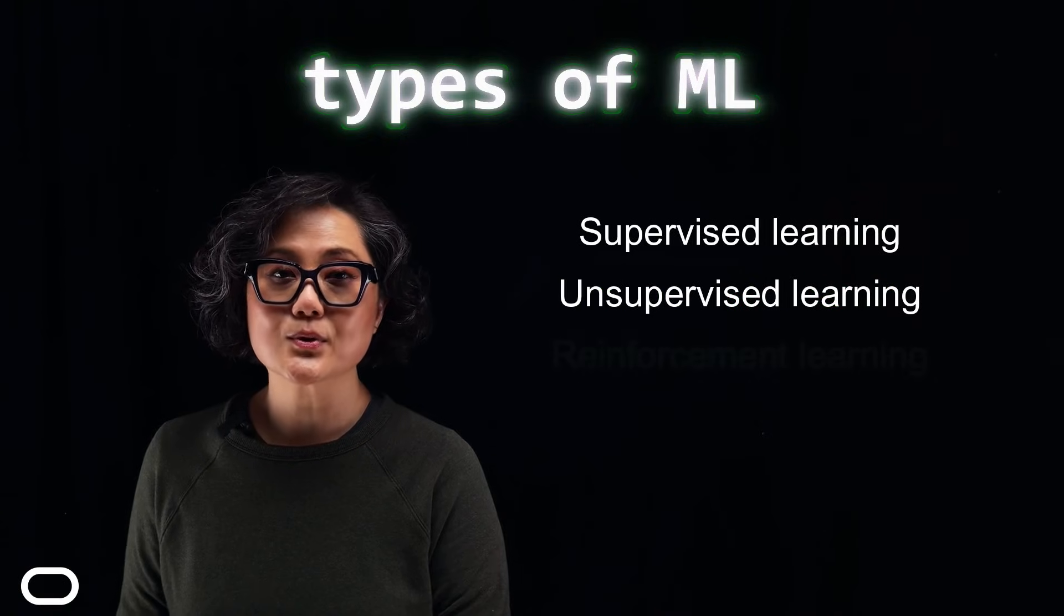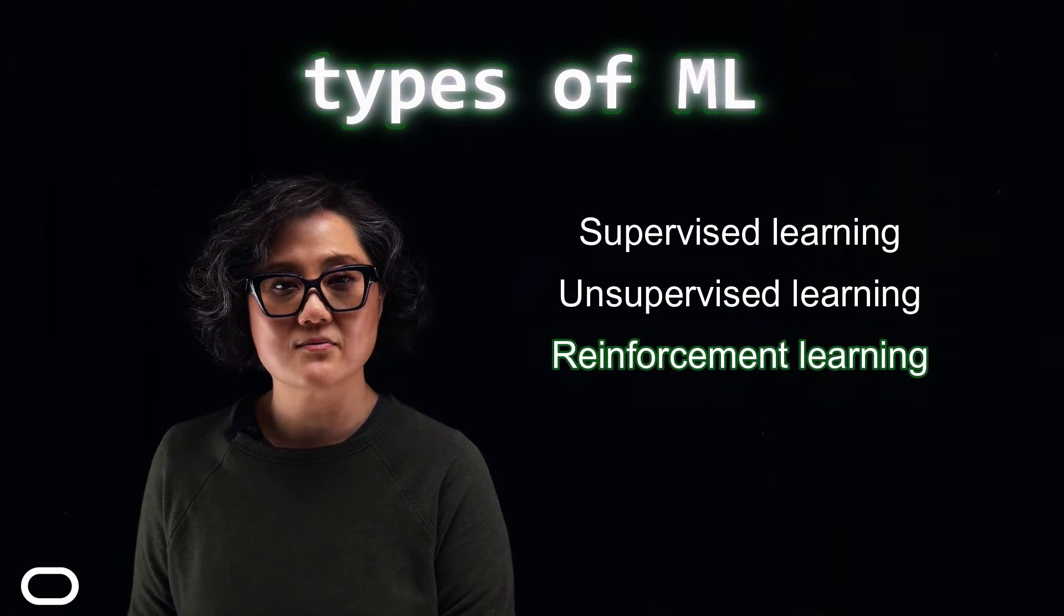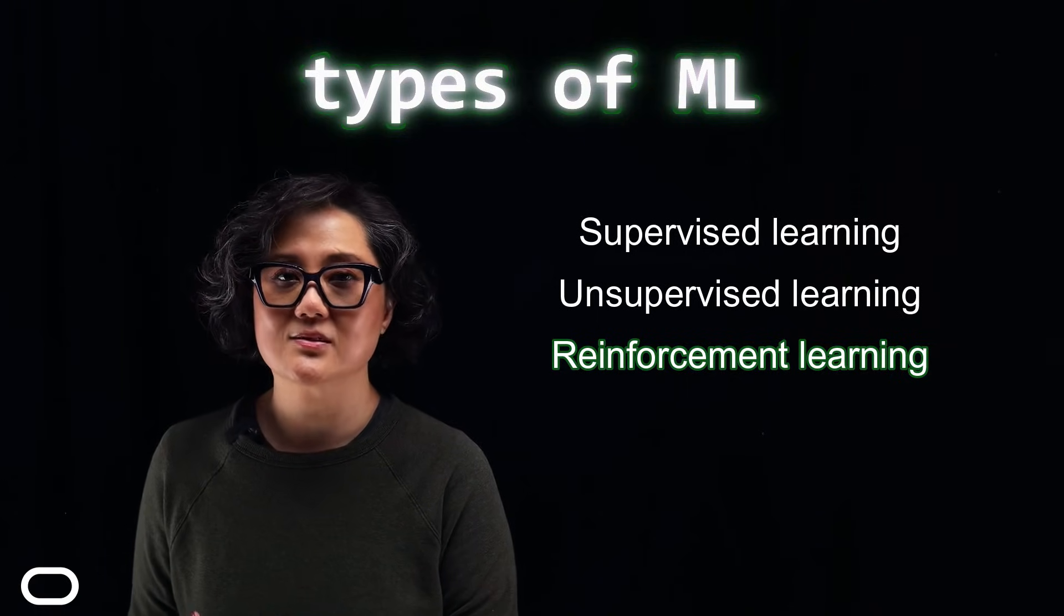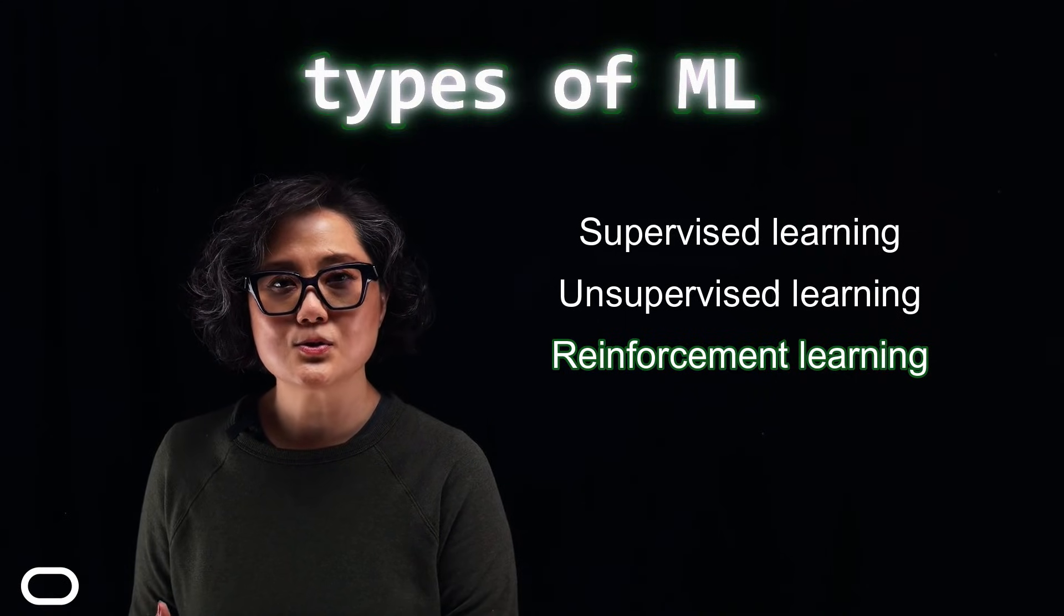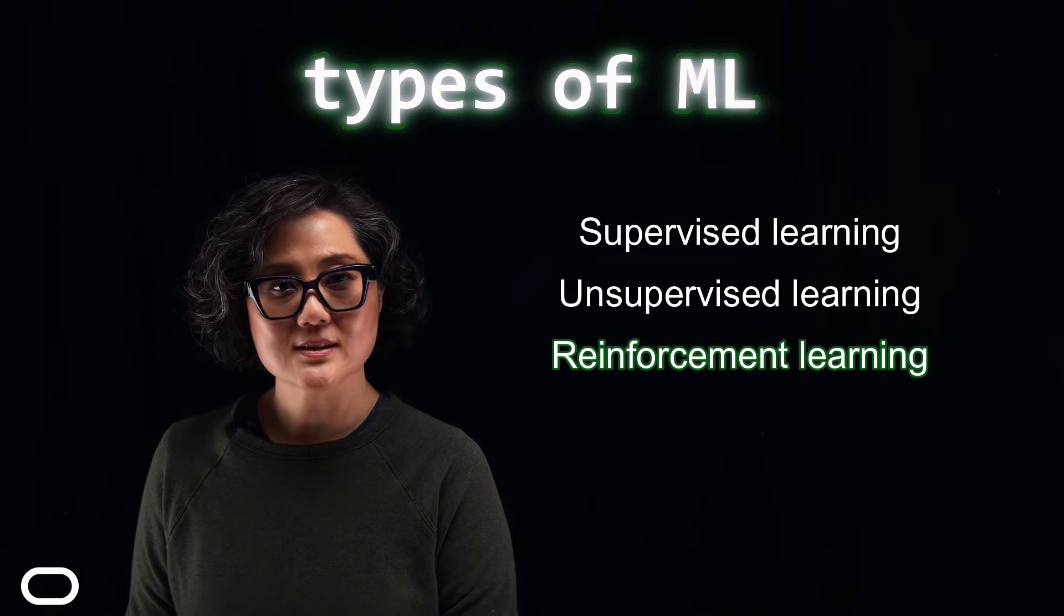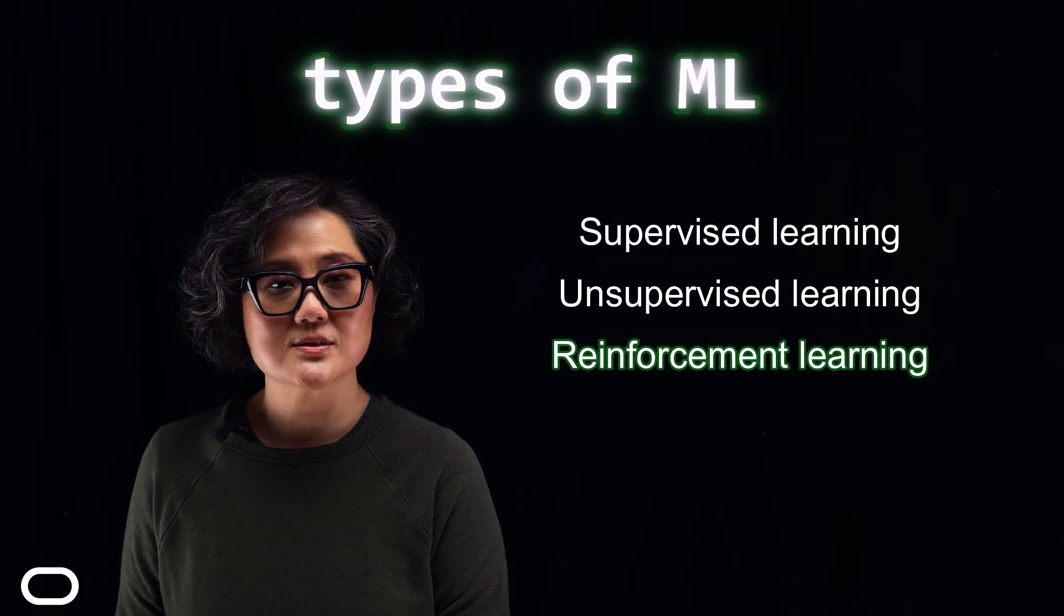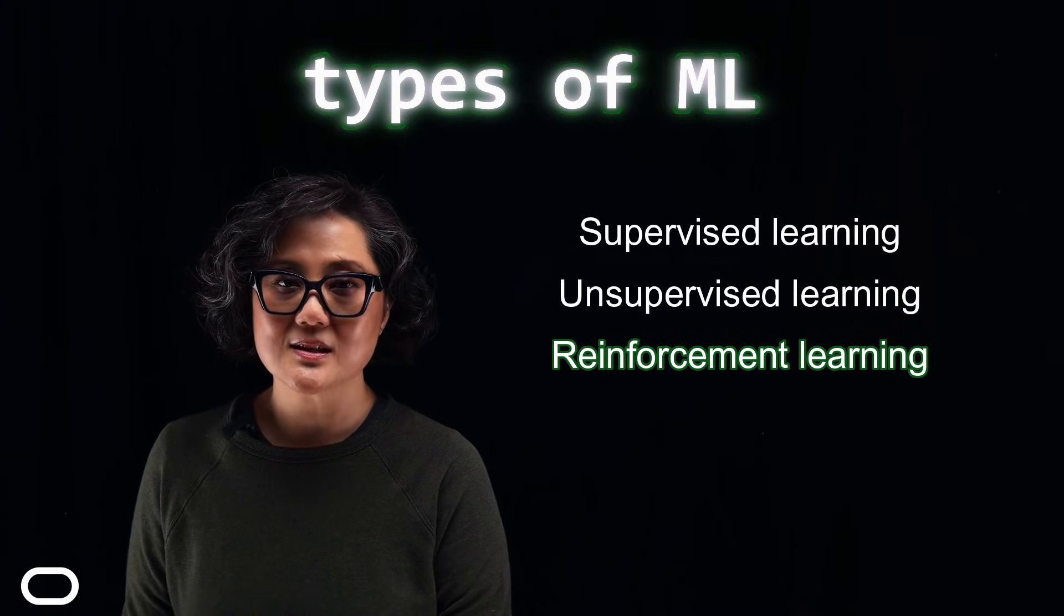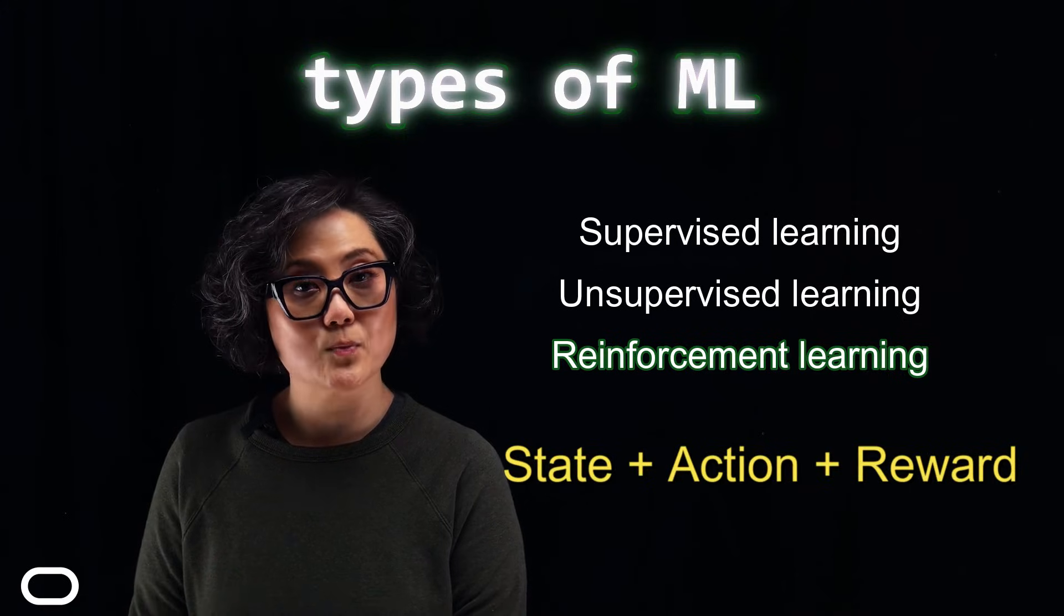Lastly, there's reinforcement learning, where the model learns by interacting with an environment, receiving penalties or rewards based on its actions. You can think of it like teaching a dog new tricks. For example, in reinforcement learning, you teach a robot to navigate a maze through a system of rewards. There are three basic concepts in reinforcement learning: state, action, and reward.